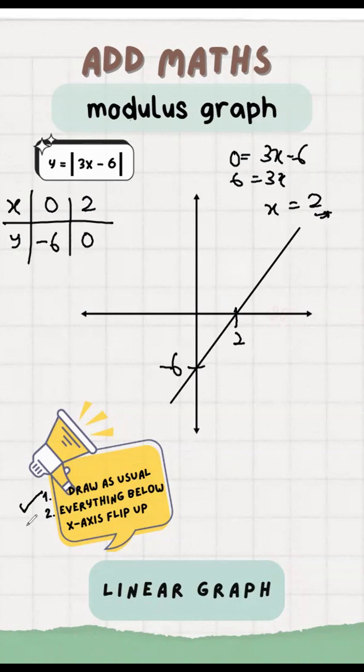After draw the original graph, then everything below the x-axis have to flip up. And then the initial value below x-axis will flip up. It becomes positive value. Like this, then we successfully get the modulus graph.